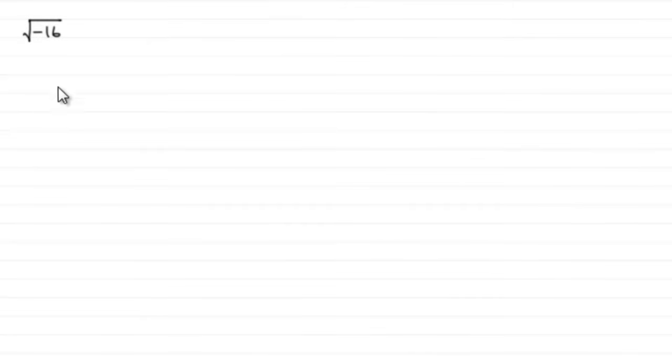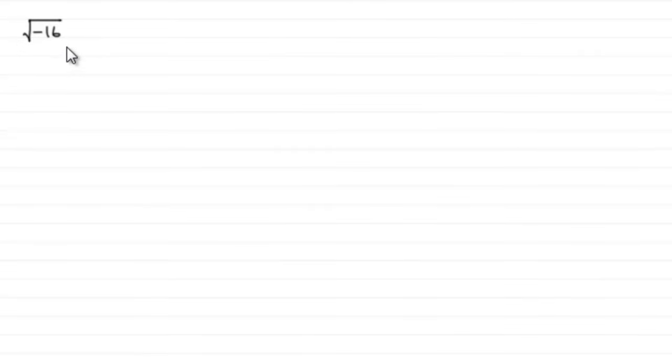Hi, this is the first tutorial in my series on complex numbers. Suppose you had to work out the square root of minus 16. If you did it on a calculator, you'd most probably find that it gives you a maths error. And why is that? Well, obviously there's not two numbers exactly the same that multiply together to give us minus 16.